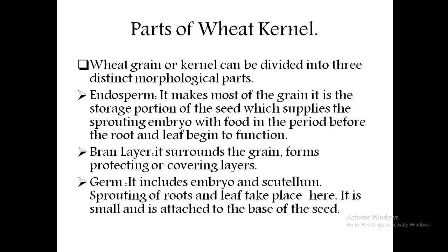Coming to the parts of the wheat kernel, there are three basic parts. The first part is the bran — the outer covering. The second is the endosperm — the storage of starch. The third is the germ cell, also called the embryo, which is the place where life starts.